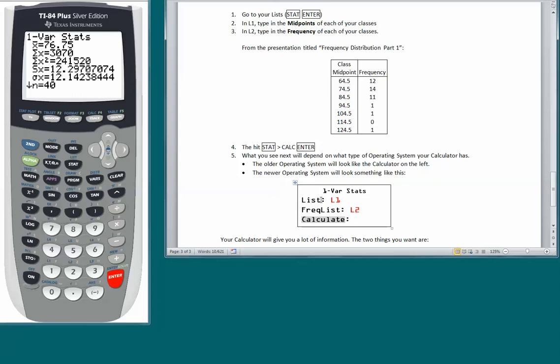In that case, right after List, you want to put in L1. That again is 2nd 1. After Freq List, you want to put in L2, and then you will arrow down to Calculate. You will highlight Calculate the way it looks here, and then you will hit the ENTER key.